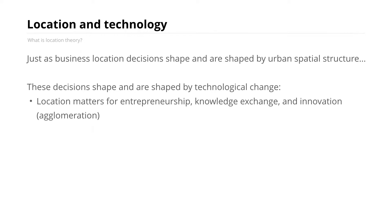One of the primary components of agglomeration theory deals with the way in which business location patterns matter for entrepreneurship, knowledge exchange, innovation, and learning. These are all fundamental components that drive technological change and innovation on a macro scale, and their underpinnings are related to the micro-scale location decisions that individual businesses and economic actors make.